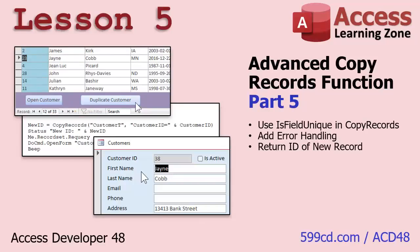In Lesson 5 we're going to take the IsFieldUnique function and put it inside our copy records function. We'll check all the fields before copying them to make sure they're not indexed no duplicates. We'll add error handling, then convert copy records into a function that returns the value of the newly created record — so we can do things like open a form directly to that new record.